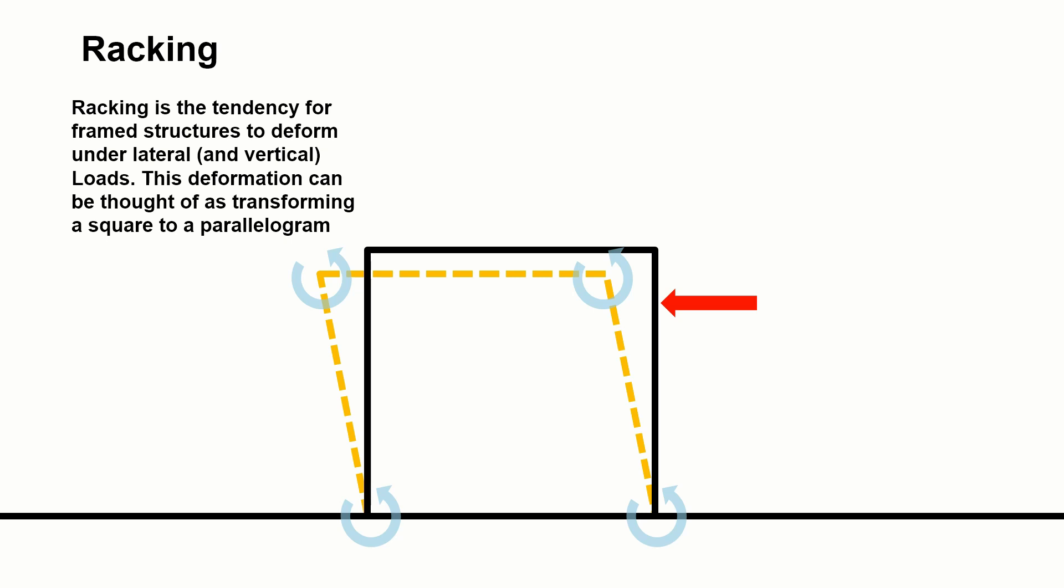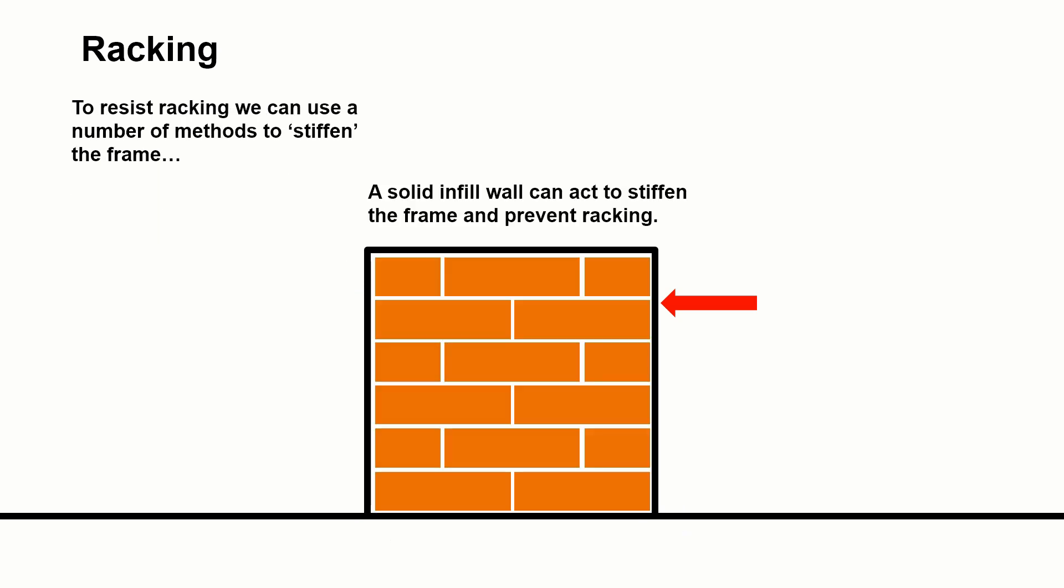If we think about racking as the tendency for a frame structure to deform under those loads, the deformation would be to make something that is square or rectangular into a parallelogram. It's pushing it out of shape, it's deforming it. What tends to happen if this is unbraced, the members would rotate relative to each other at the connections. They'd no longer be at 90 degrees. Some of them would form obtuse angles and some of them would form acute angles through a rotation of that joint. So how do we stop that?